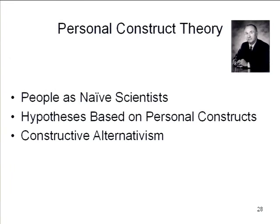Kelly begins with a proposition familiar from Piaget — though Kelly never cited Piaget; he didn't cite anybody except himself — which is the idea that people are naive scientists. As we go around in the world, we're trying to figure out how the world works, trying to predict what's going to happen next. We acquire knowledge kind of the way scientists do: inducing theories from experience, generating hypotheses based on those theories, testing those hypotheses, and revising our theories based on the results of our informal experiments. That idea of the person as a naive scientist also comes to us from Lewin and others.